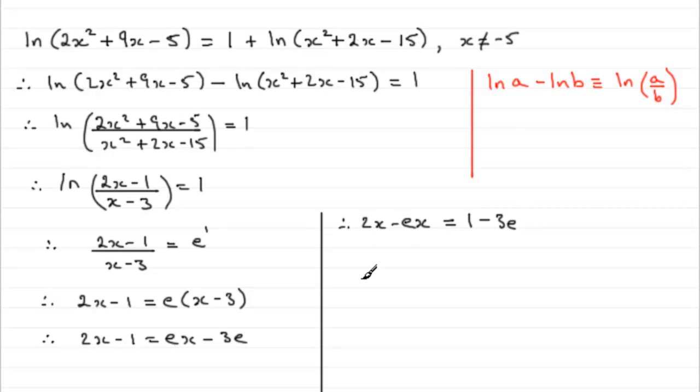So if I do that, we're going to end up with 2x - ex = 1 - 3e. And now I can factorize this side, pull out x as a common factor, and you've got (2 - e). And that equals the 1 - 3e on the other side. And now just divide both sides by (2 - e) to leave you with x = (1 - 3e)/(2 - e).